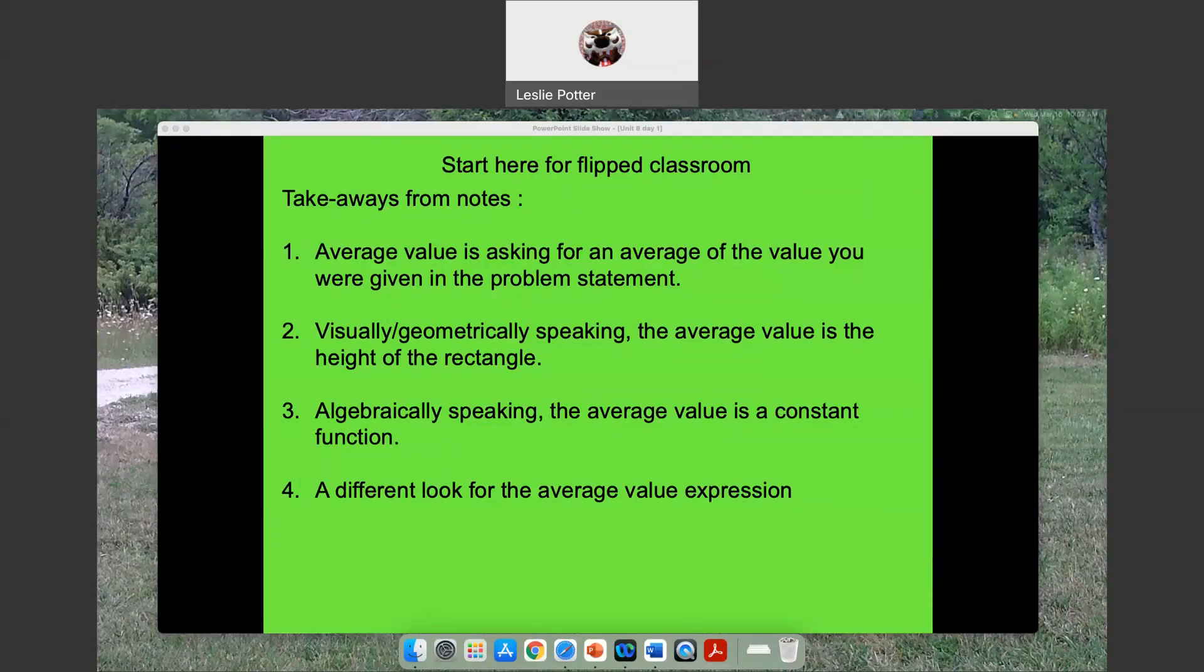And so the idea is when you have something, let's say I have distance, and then I'm asked for the average rate of change of the distance, then I am asking you to differentiate. But when I have an average value, then what I'm asking you to do is average the value of the value you were given in the problem statement.